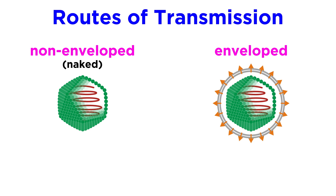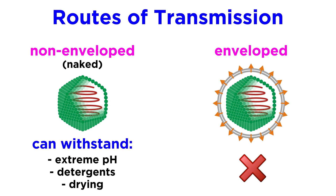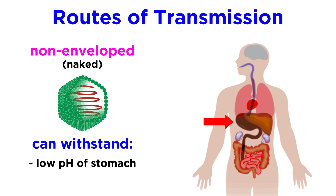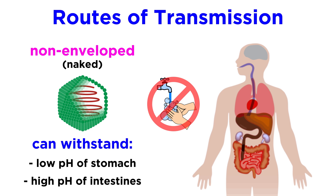Non-enveloped, or naked, viruses can withstand extreme pH, detergents, and drying, whereas enveloped viruses typically can't. Most non-enveloped viruses can handle the acidic pH of the stomach and detergent-like bile of the intestines, which means that if someone infected with a non-enveloped virus doesn't wash their hands after using the bathroom, they could be unknowingly spreading a virus that successfully made it all the way through their digestive system.